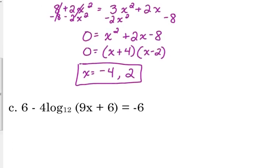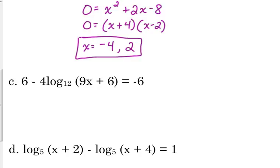Now, what happens if we don't have a log on both sides? Let's look at example C. 6 minus 4 log base 12 of 9x plus 6 is equal to negative 6. We do not have a log on both sides, so we cannot use the technique that we just used. That only applies when you have the same log on both sides. So, if I'm looking at this, I only see my variable in one place. It's right here, inside my logarithm. So, kind of like with our exponential equations, we want to do what we can to get that logarithm by itself.